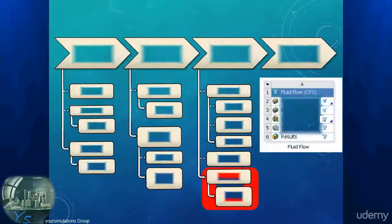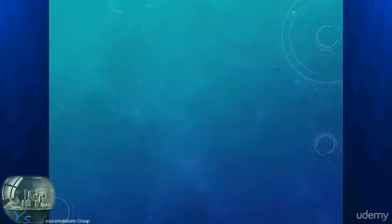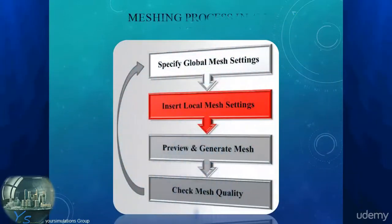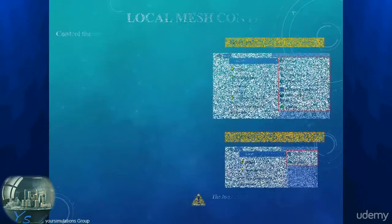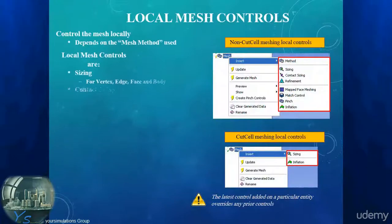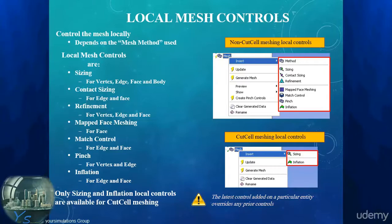In the pre-processing workflow, we reach the last controls to define the mesh resolution. In the meshing process, it is the second step after the global mesh settings and the meshing methods. The available local controls depend on the meshing method that is active for a specific body, so the following local controls are not always available.